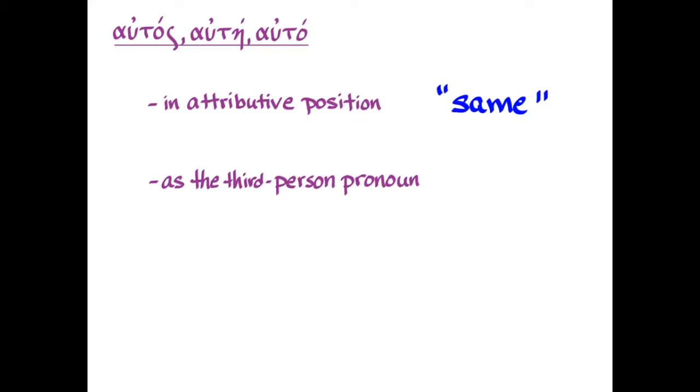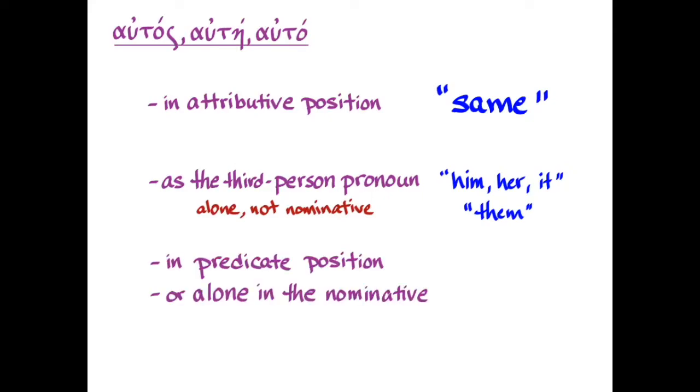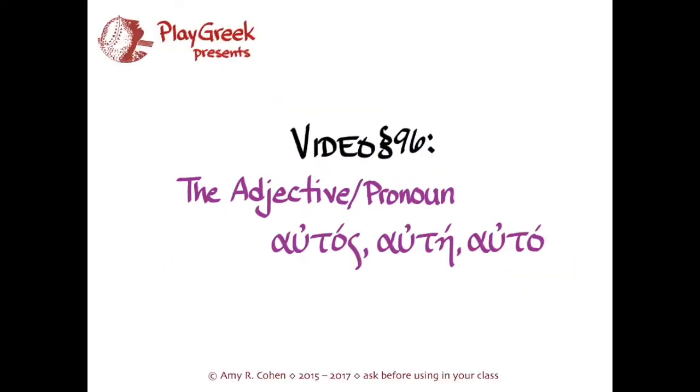So this is an incredibly useful word, autos, ate, auta. You can guess that it's going to be used frequently in the Greek that you're going to be reading. So let's just remember the three different things it can do. In attributive position, it's simply the adjective same. When it's on its own and not nominative, it's the third person pronoun. And when it's in predicate position or alone in the nominative, it's an intensifier. And the way that we do that in English is add the suffix self to our pronouns. So it's going to take some practice to remember each of these things and how they occur. But the concepts themselves, I think, are pretty simple. And so now you know the adjective, pronoun, autos, ate, auta.